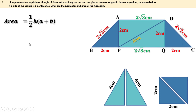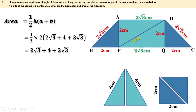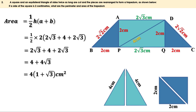Replacing the values, we get half into 2 into (2 root 3 plus 4 plus 2 root 3). Half into 2 is 1, so this becomes 2 root 3 plus 4 plus 2 root 3. Now 2 root 3 plus 2 root 3 is 4 root 3, so this can be written as 4 plus 4 root 3. Taking 4 outside as a common factor, we can write this as 4 into (1 plus root 3).